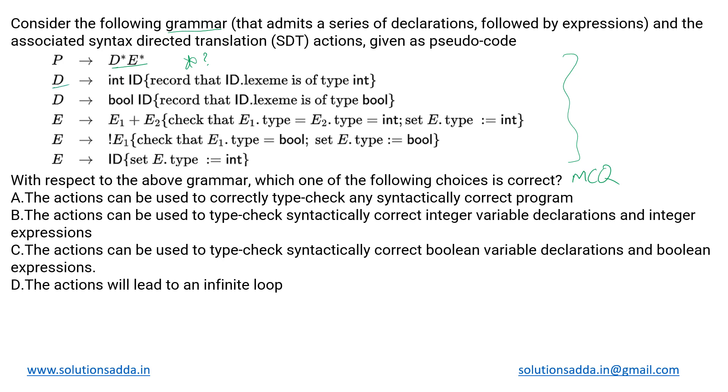Then this D derives int of ID. What does that mean? It records that ID dot lexeme is of type int, meaning it is acting as an assertion and the symbol table is being involved in both of these SDTs. As we know, in the symbol table we have all the information stored about the lexemes, types, and what symbols we are having. So that's what's being accessed and recorded in these two queries. We can have the lexemes of type either int or bool, so for both of them separate rules have been given. This one records that ID dot lexeme is of type bool. If it is of int type, then that particular entry is made; if it is of bool type, then its corresponding entry is made into the symbol table.